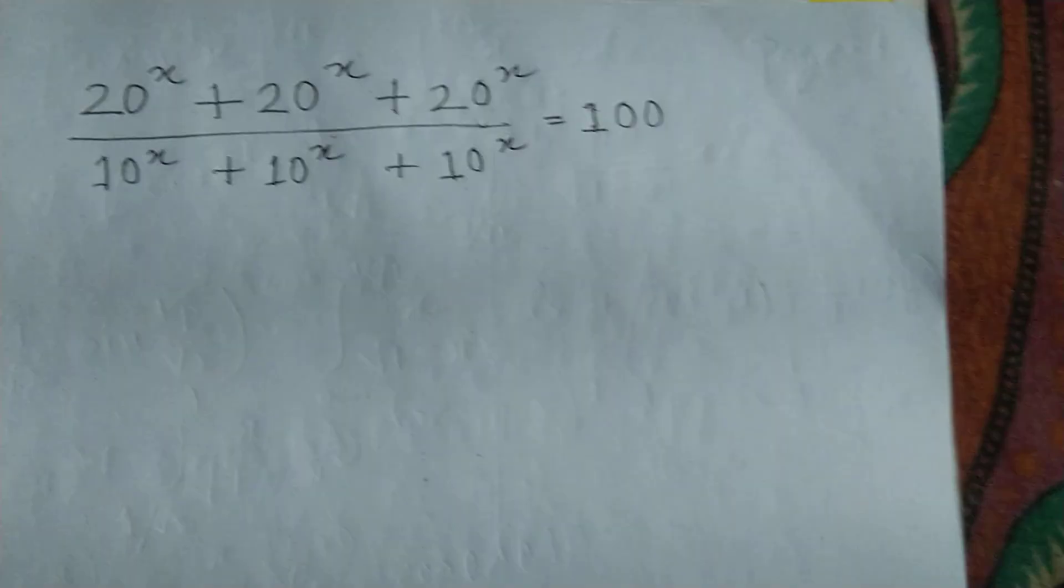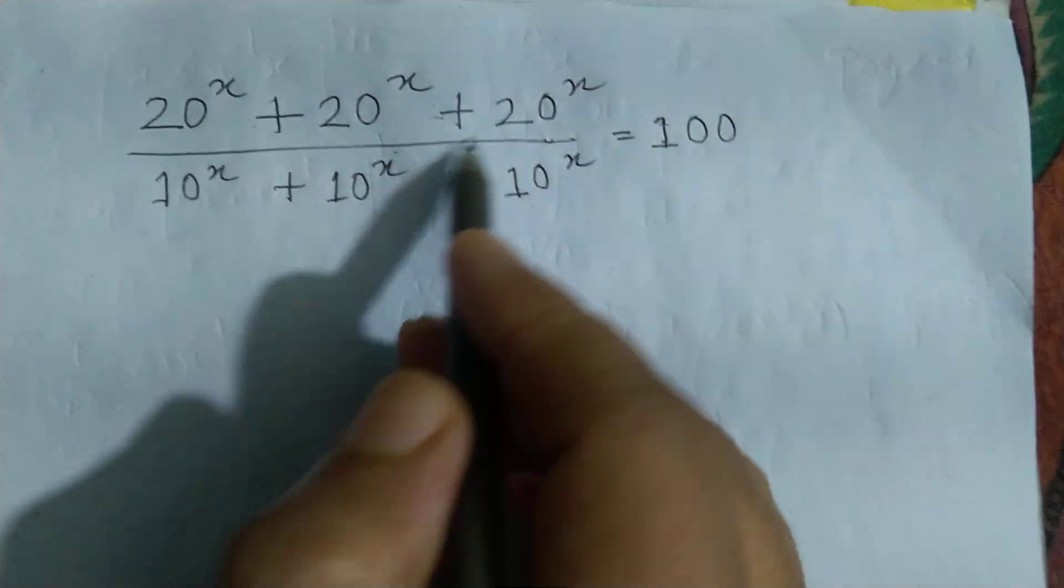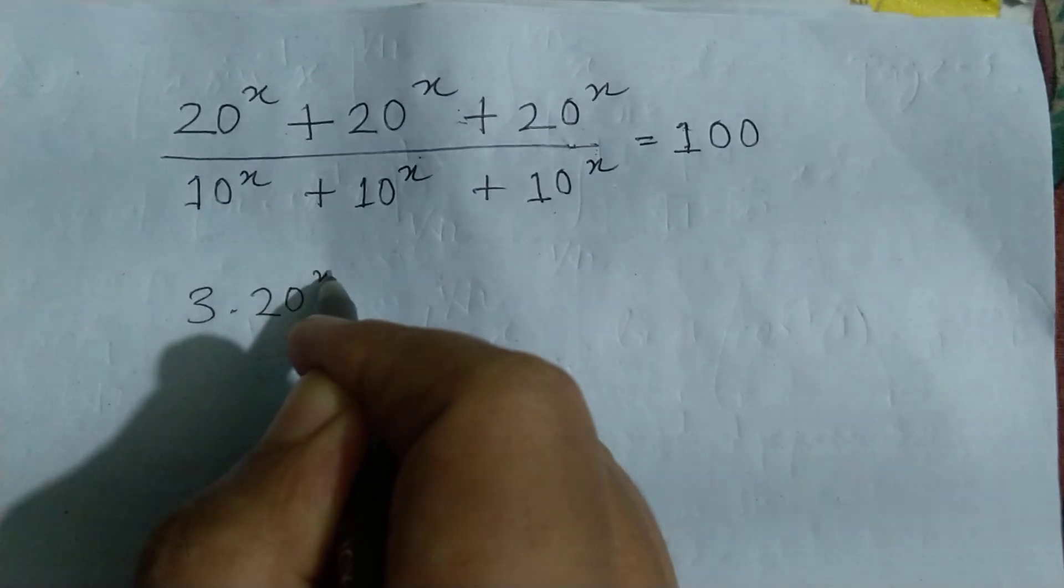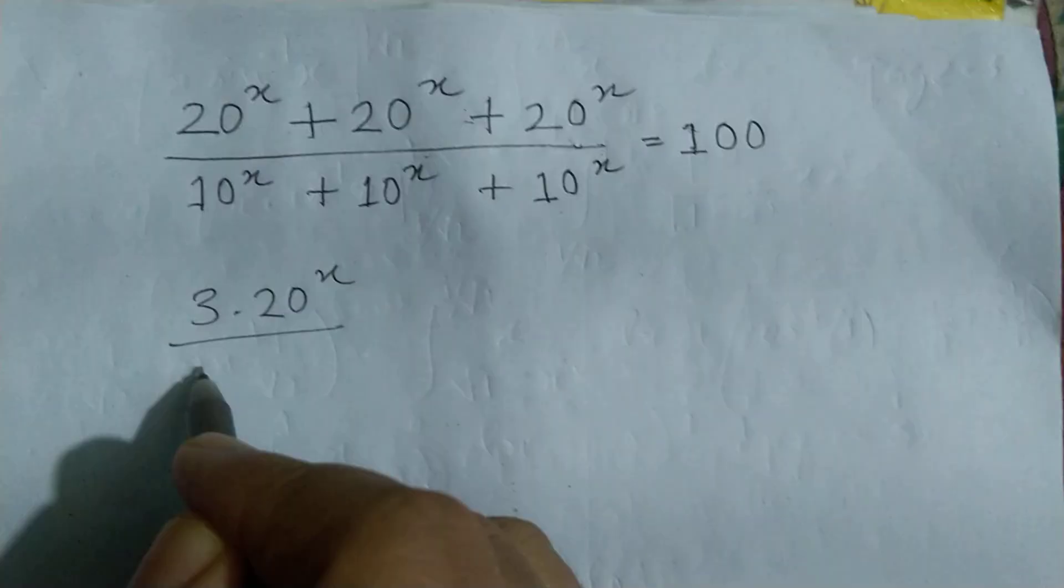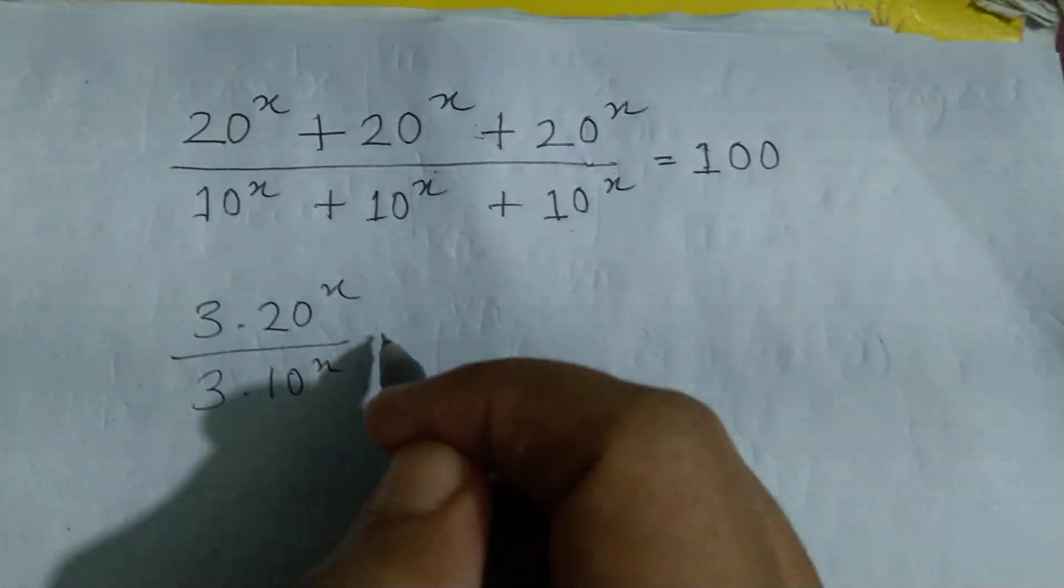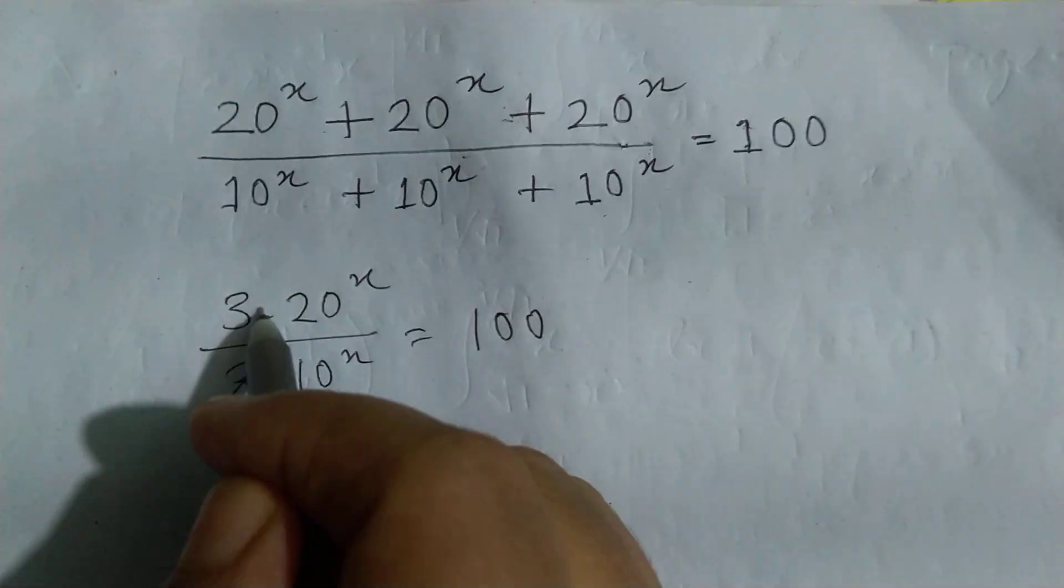At first, you see that 20^x + 20^x + 20^x, this is three times, so I can write 3×20^x. And also I can write 3×10^x = 100. Now we know the 3's cancel, so we can write (20/10)^x = 100.